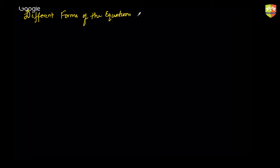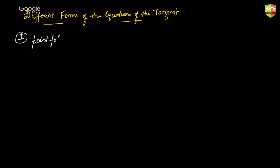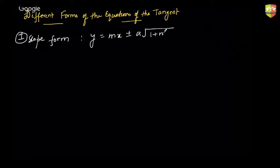Now we'll talk about different forms of the equations of the tangent. After this, I'll give you a five-minute break. The first form we discussed is the slope form, where the equation is y = mx ± a√(1 + m²) — called the slope form because the slope m is given to you.